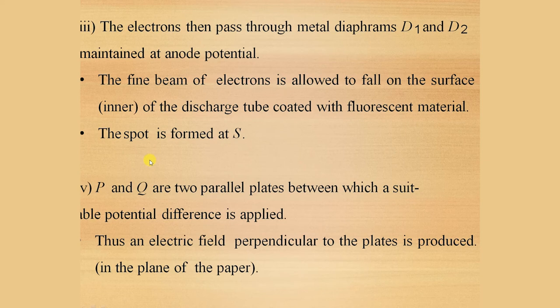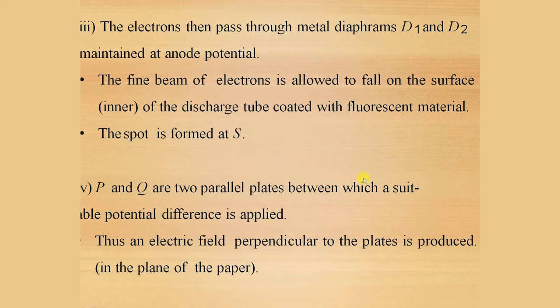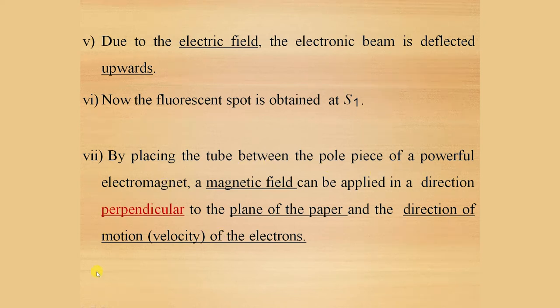When there is no electric or magnetic field, the spot is formed at S. P and Q are two parallel plates between which a suitable potential difference is applied, meaning an electric field exists between these plates. Due to the electric field, the electron beam is deflected upwards, and the spot is now formed at S1. The magnetic field is applied by placing the tube between the pole pieces of a powerful electromagnet, in a direction perpendicular to the plane of the paper and the direction of motion of the electrons.